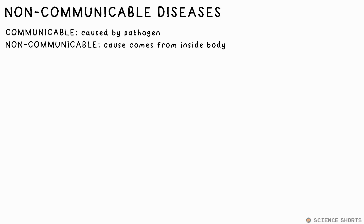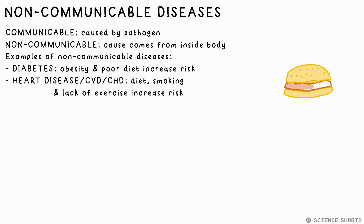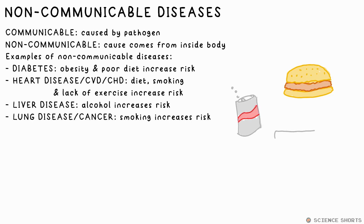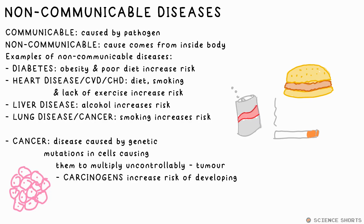CVD (cardiovascular disease) is an example of a non-communicable disease, as the cause comes from inside your body. Other examples include allergic reactions and cancer. A communicable disease must be caused by a pathogen that enters your body, causing a viral, bacterial, or fungal infection. Obesity and too much sugar can cause type 2 diabetes. A bad diet, smoking, and lack of exercise can affect the risk of heart disease. Alcohol can cause liver disease, smoking lung disease or lung cancer. Cancer is the result of damaged cells dividing uncontrollably, leading to tumours. A carcinogen is the term given to anything that increases the risk of cancer — for example, the tar in cigarettes.